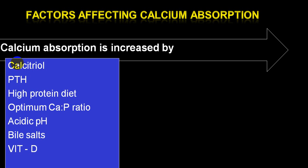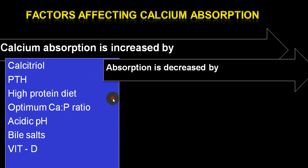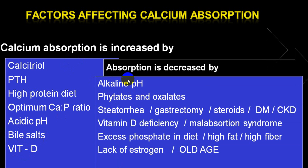Absorption will be increased by calcitriol — vitamin D3, specifically 1,25-dihydroxycholecalciferol — and parathormone. These two hormones increase the absorption of calcium from the GI tract as well as the kidney. If food contains high protein diet, with an optimum calcium-to-phosphorus ratio, an acidic pH, presence of bile salts, and adequate quantity of vitamin D3, absorption is increased.